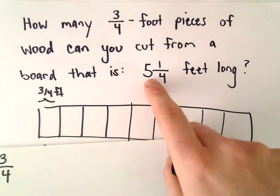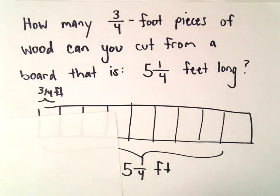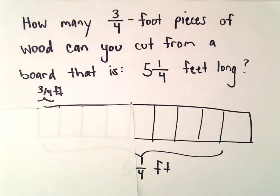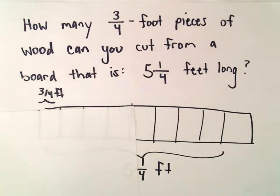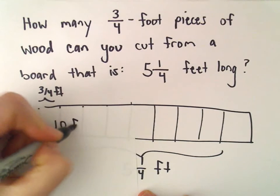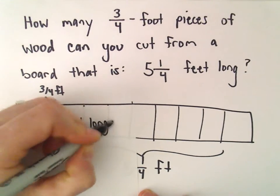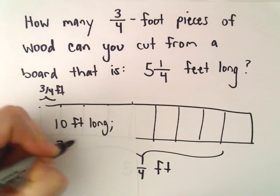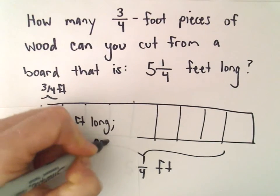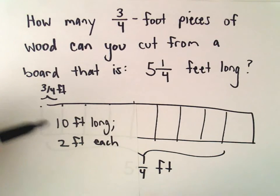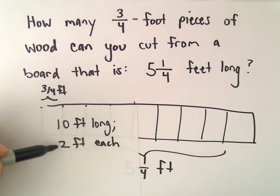Sometimes if you have a problem like this and maybe the numbers are kind of throwing you off and you're like, do I have to multiply or divide or I don't know, make it easier numbers. Suppose it was ten feet long and suppose they were two feet each. Maybe this is a little bit easier, right? If it's ten feet long and they're two feet each, you can get five.